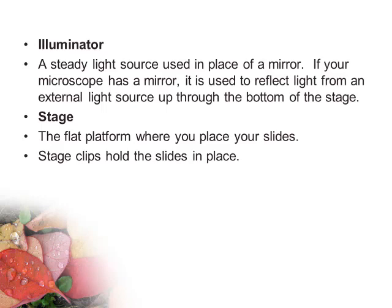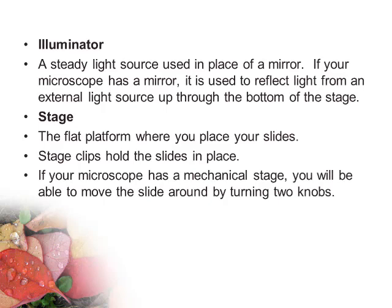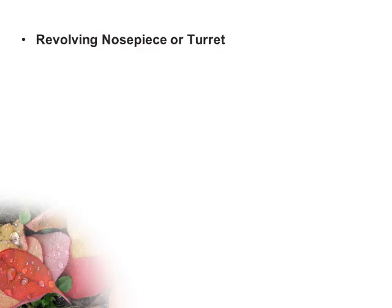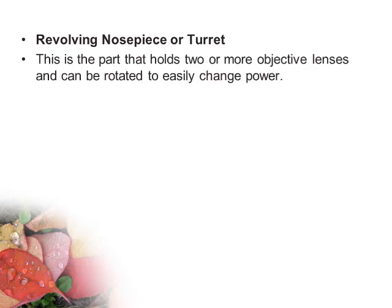Stage clips hold the slides in place. If your microscope has a mechanical stage, you will be able to move the slide around by turning two knobs — one moves it left and right, the other moves it up and down. The revolving nosepiece, or turret, is the part that holds two or more objective lenses and can be rotated to easily change power.